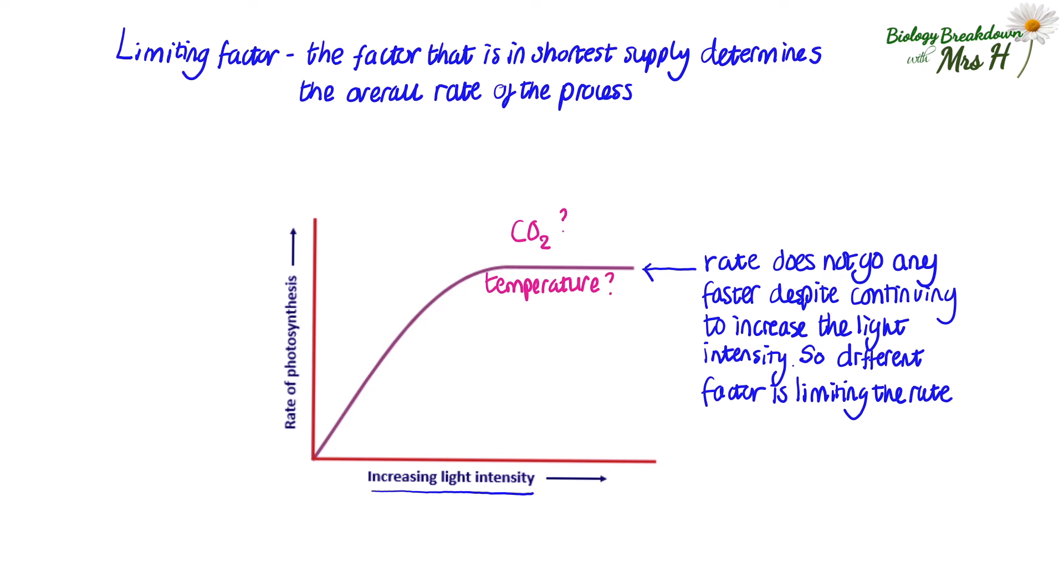If we increase the carbon dioxide concentration, the rate would go faster. If we increased the temperature, the rate would go faster. But with temperature, we need to make sure we don't increase it too much. Otherwise, we will denature the enzymes needed for photosynthesis to take place and then the reaction would stop altogether.